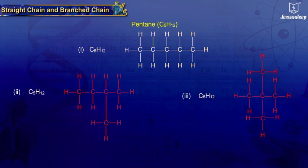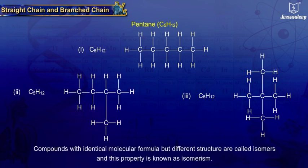These compounds can also have branched chain. Compounds with identical molecular formula but different structure are called isomers, and this property is known as isomerism.